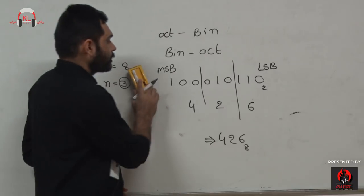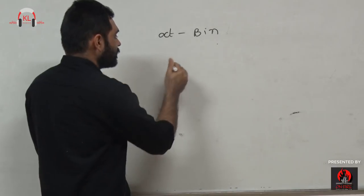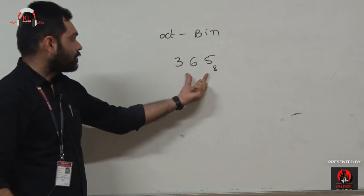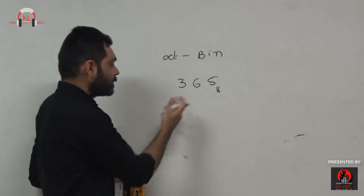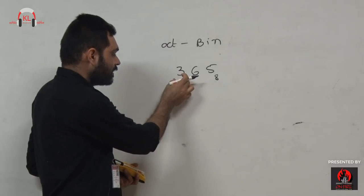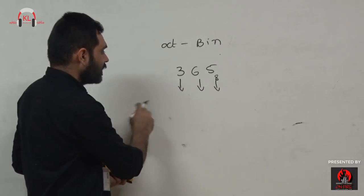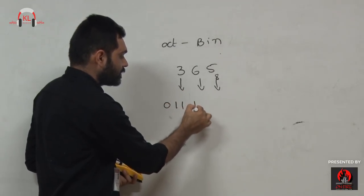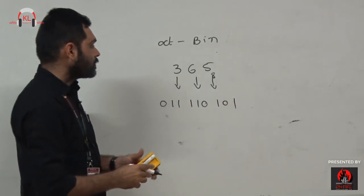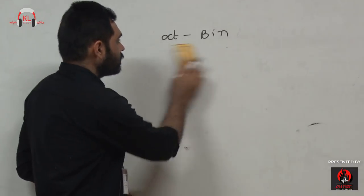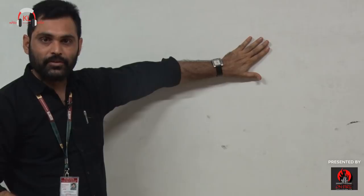Similarly, octal to binary is the reverse process. For an octal number, represent each digit in its 3-bit binary equivalent. For example, 3 = 011, 6 = 110, 5 = 101. It is very easy to convert between octal and binary using this method. The key formula is 2^n: for octal, n = 3, meaning 3 bits per octal digit.